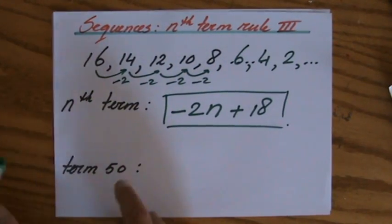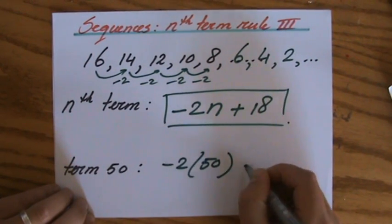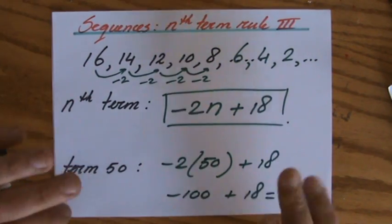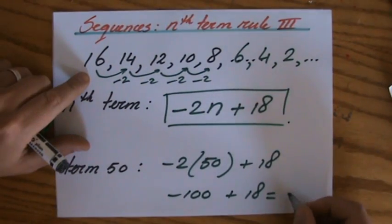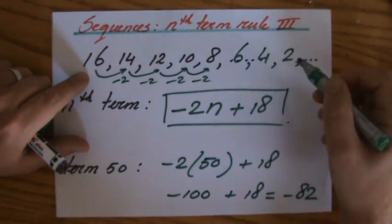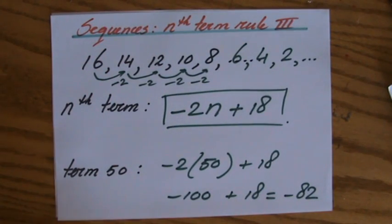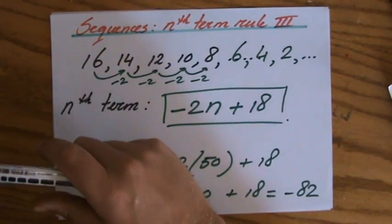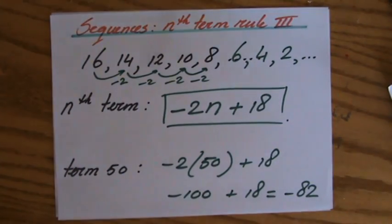I can use that now to find the value of term 50 very easily: minus 2 times 50 plus 18. That's minus 100 plus 18 — or 18 minus 100 — which is minus 82. Because the sequence is getting smaller and smaller. I hope that was useful. I have one more video with some example questions, or you can check my website explainingmaths.com, or find me on Facebook and ask me your questions. I'll see you later.